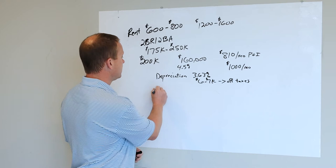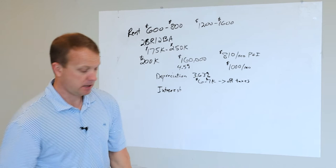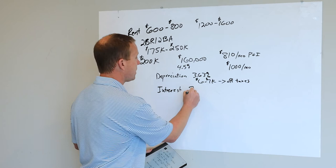In addition to that, you're going to be able to write off the interest. Now the interest is going to be around $7,000 per year.